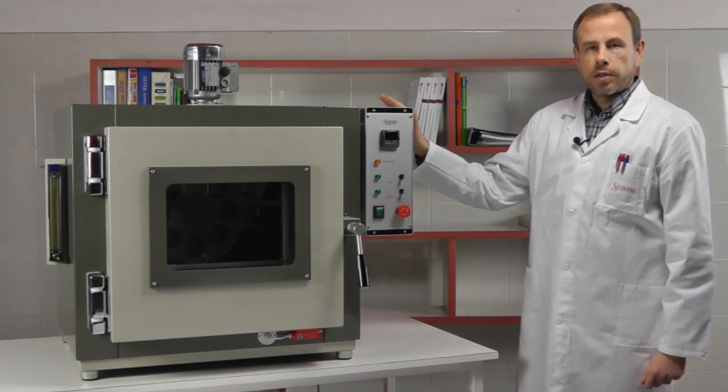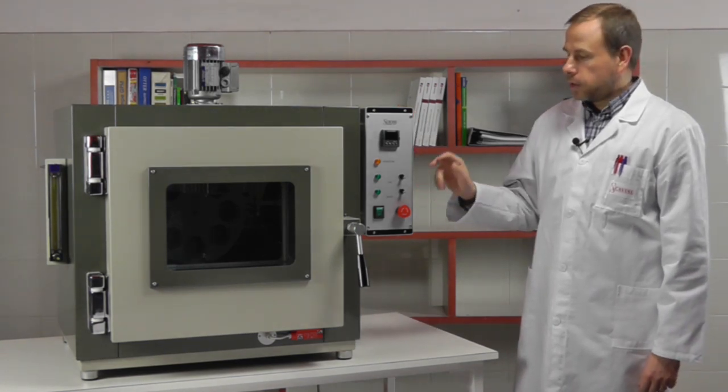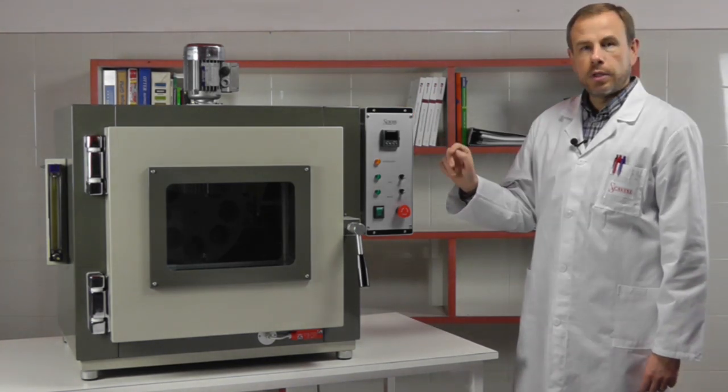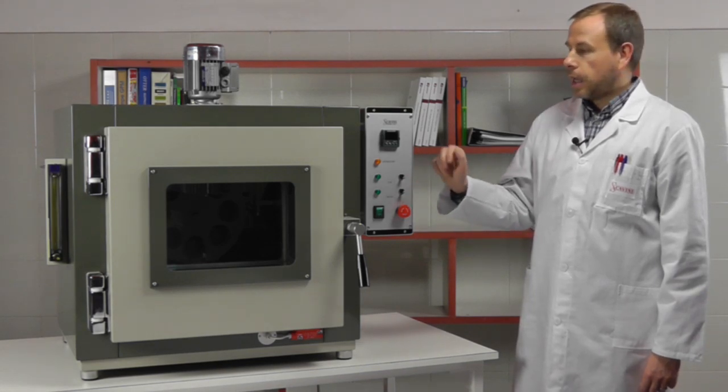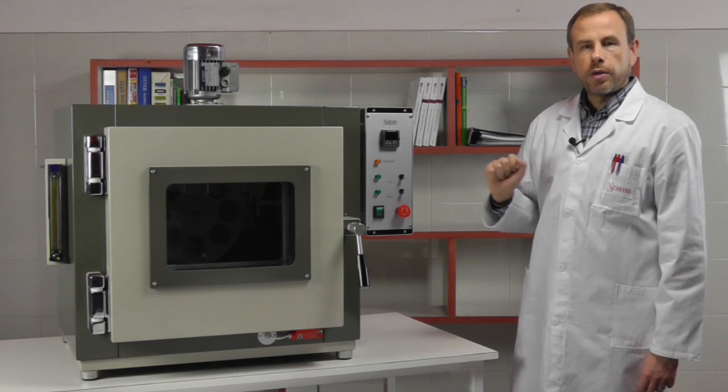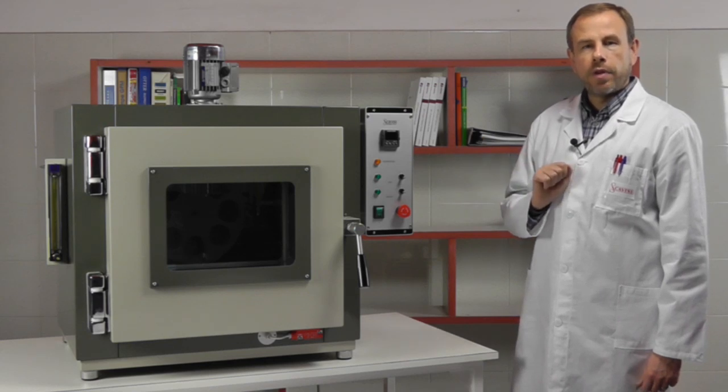On this side we have the control box with mains, emergency, two dedicated switches - one for the fan and the other for the carriage motor - and the electronic thermoregulator with an accuracy of one tenth of a degree.